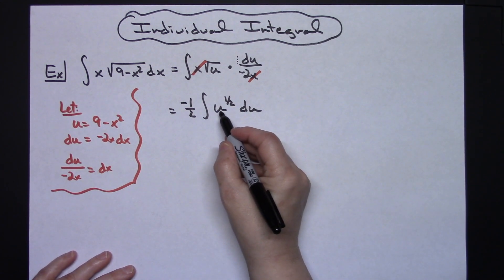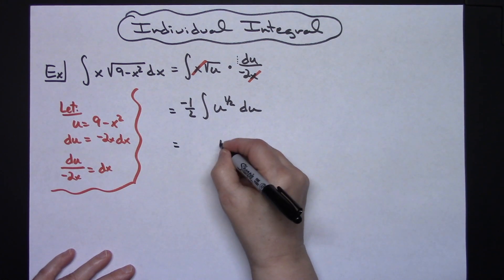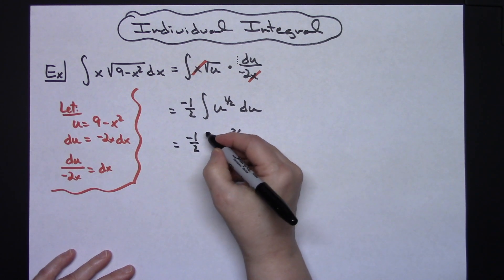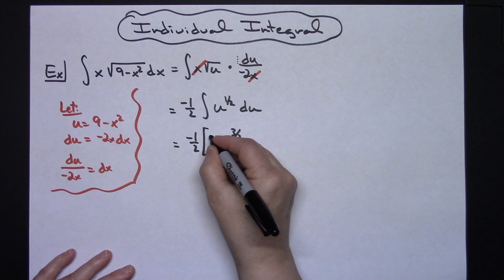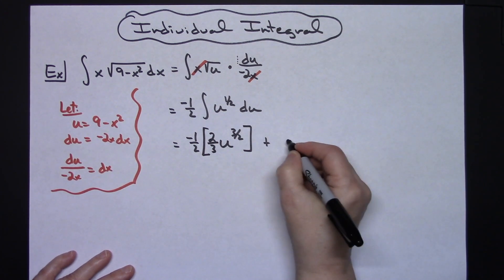I'm going to add one, which is going to give me u to the three-halves. I've got the negative one-half still sitting out there in front, and then multiply by that reciprocal—I'll have that two-thirds in front.